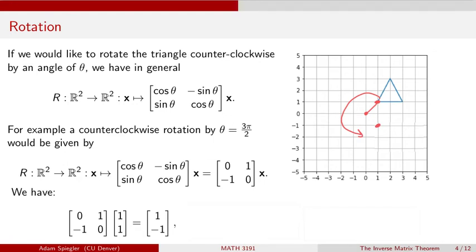And then we can take a look at what happens to the next vertex, which is located at 3, 1. And we can see that this is going to wind up mapped at 1 minus 3. So let's mark this point over here. So here we are at 1 and then here we are at minus 3. So that's where the blue vertex is going to get rotated to.